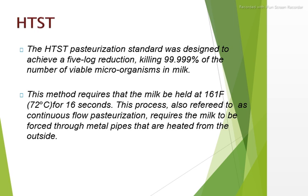The HTST method of pasteurization is designed to achieve a 5-log reduction, killing 99.999% of viable microbes in the milk. The temperature used is 161 degrees Fahrenheit or 72 degrees Celsius for 15 seconds. This process is also referred to as continuous flow pasteurization, which requires milk to be forced through metal pipes heated from the outside.